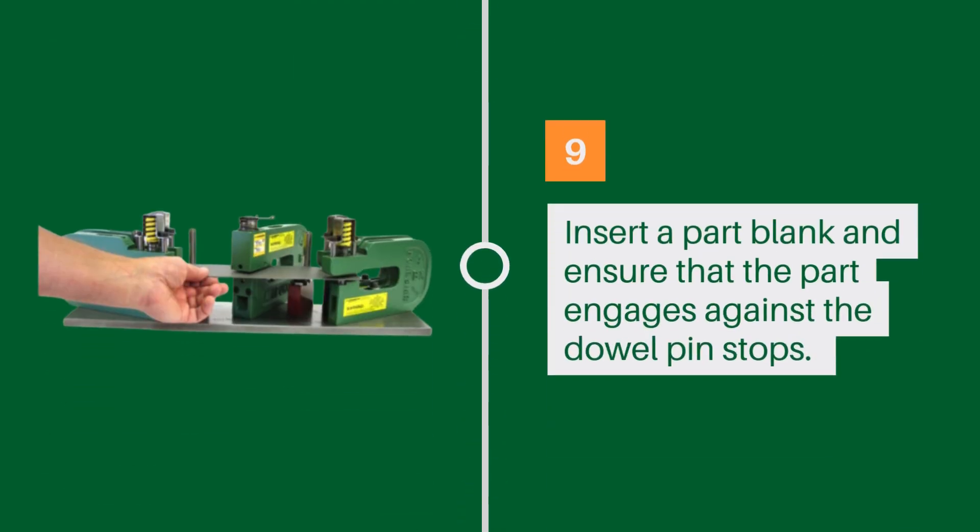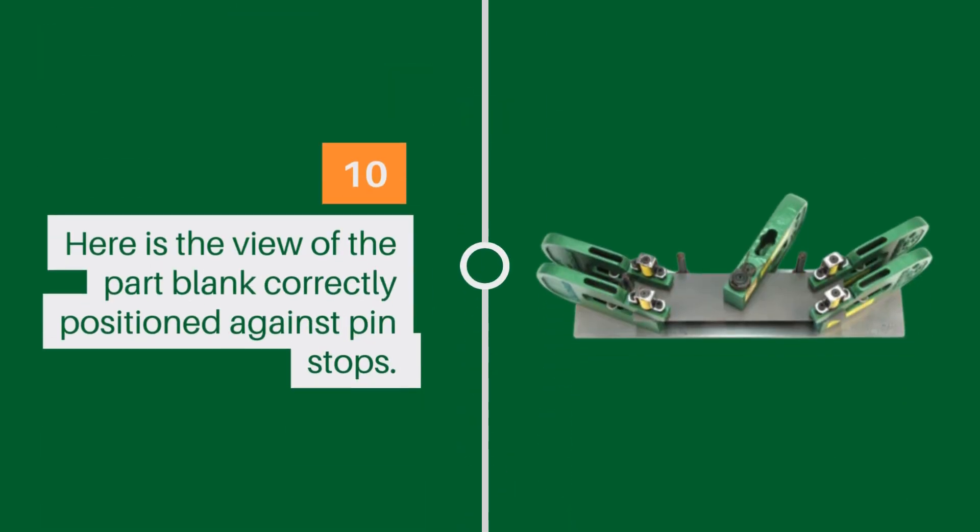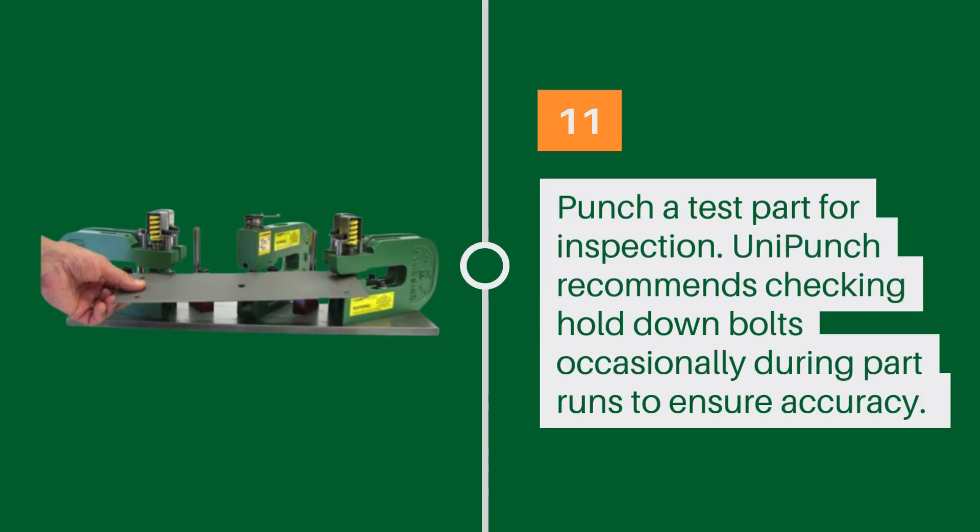Insert a blank part and ensure that the part engages against the dowel pin stops. Here is the view of the part blank correctly positioned against pin stops. Punch a test part for inspection.